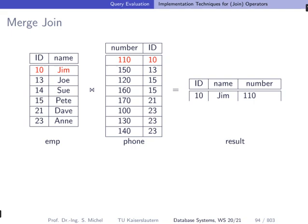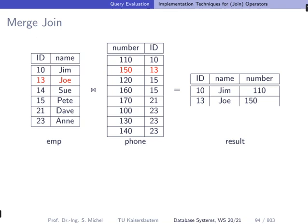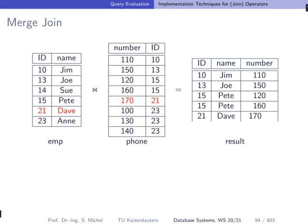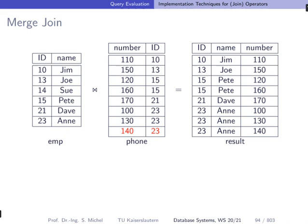I'm clicking and then you see in red marking where we currently are standing. We compare and then whenever it matches we will output. You see here now Joe and the phone number of Joe is matched according to the 13 equals 13 criteria of our join.